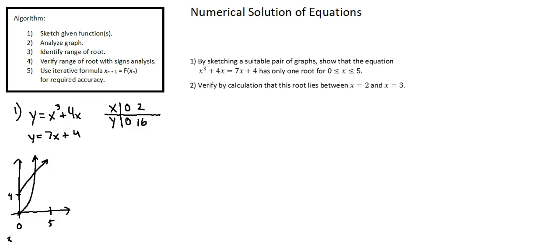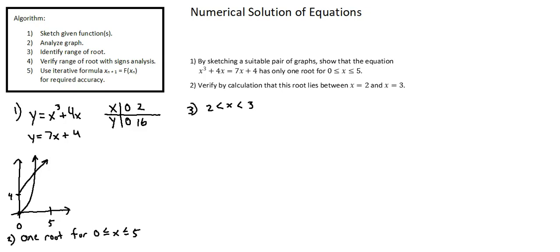Step 2: analyze graph. I'm going to note the observation based on my graph of 1 root for 0 is less than or equal to x is less than or equal to 5. Now part 2: verify by calculation that this root lies between x equals 2 and x equals 3. Step 3 of the algorithm: identify range of root that's been given to us — 2 is less than x is less than 3. Notice those are exclusive; between means we exclude the endpoints.